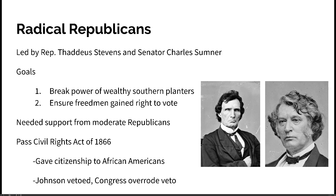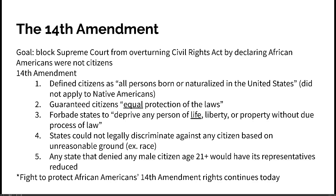In 1866, Congress passed the Civil Rights Act, giving citizenship to African Americans. However, they were worried it would eventually be overturned by the Supreme Court, so they took it a step further by passing the 14th Amendment. Johnson vetoed the Civil Rights Act, but Congress overrode that veto. They were worried the Supreme Court might overturn it — as it had ruled in the Dred Scott case — so the 14th Amendment was put in place to declare that African Americans are indeed citizens.